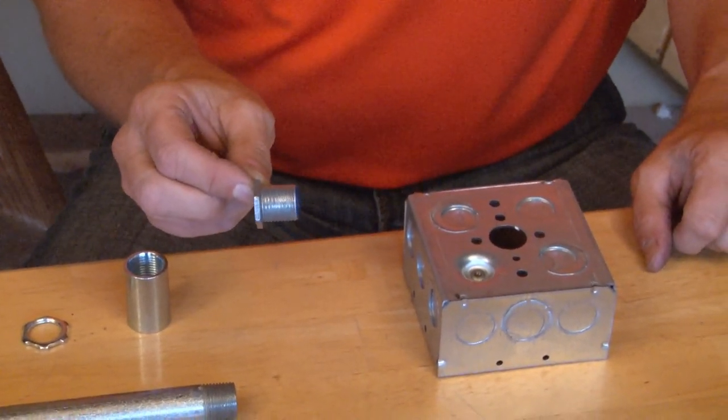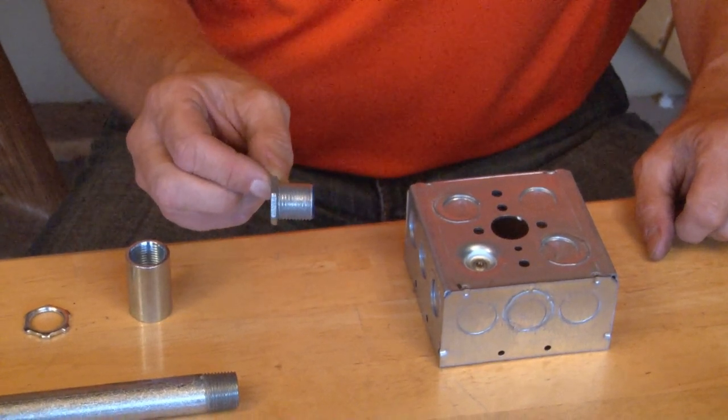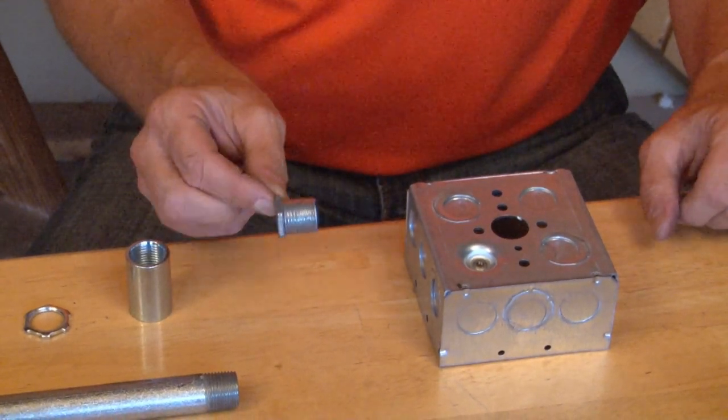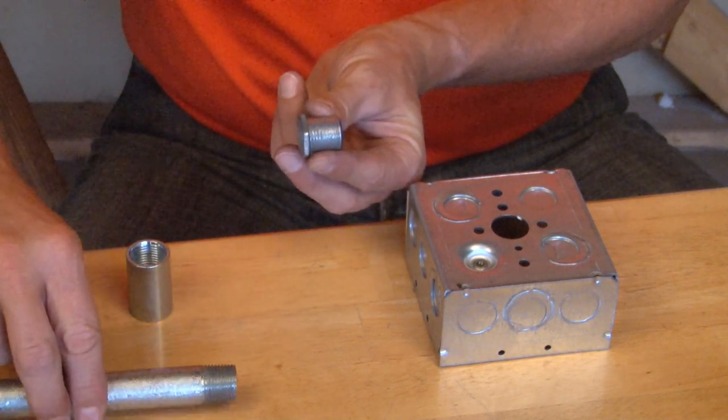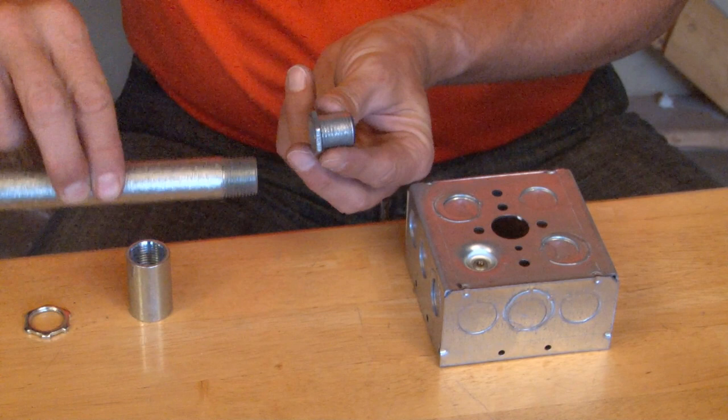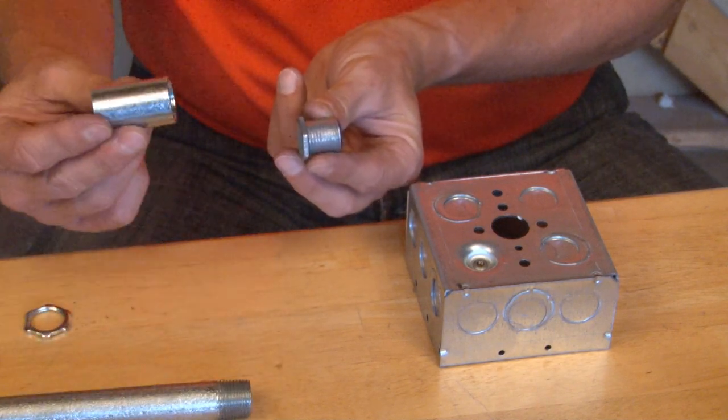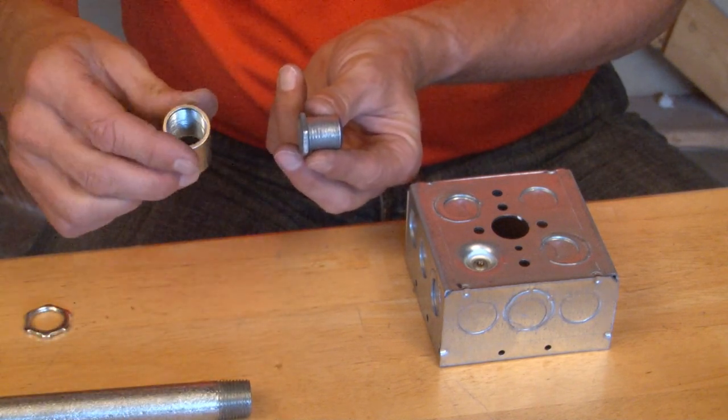The way that this product is used is really quite simple and ingenious. When using it with threaded rigid conduit to attach to a box, you're going to need a threaded rigid conduit and then a standard threaded rigid coupling.